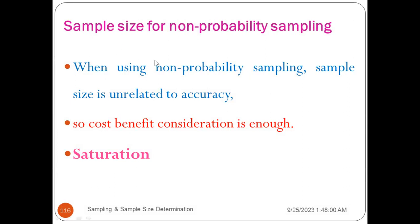Another concept is the sample size calculation for probability sampling method. When using probability sampling method, we calculate the sample size calculation for the incidence rate. There is also a cost-benefit consideration in this situation, and we are going to calculate the cost-benefit consideration by the number of stages and saturation point.